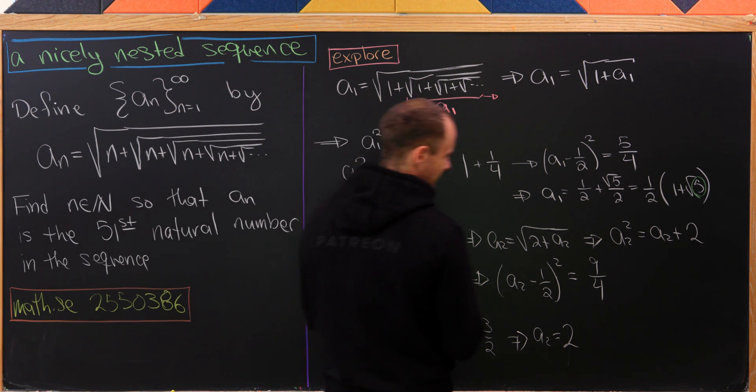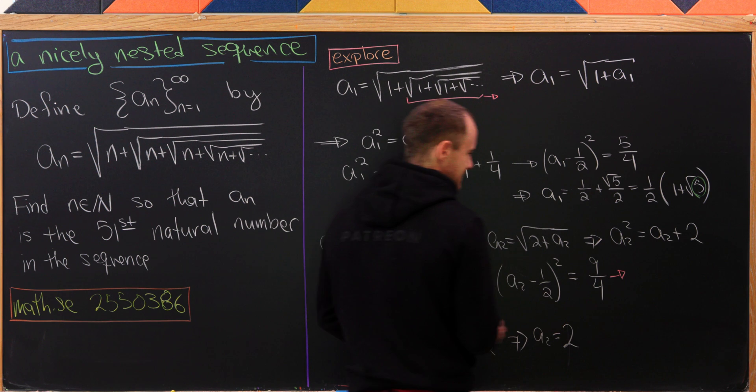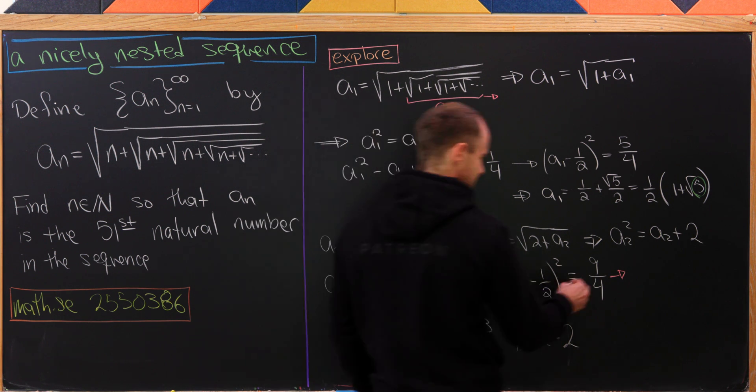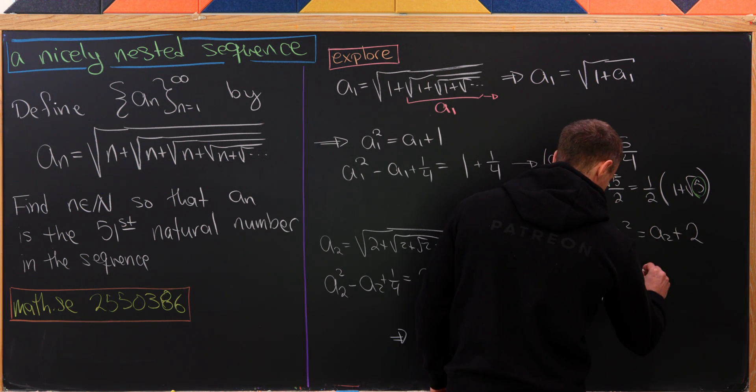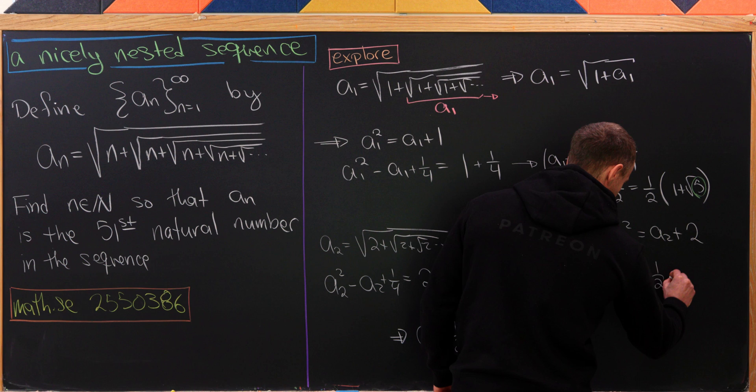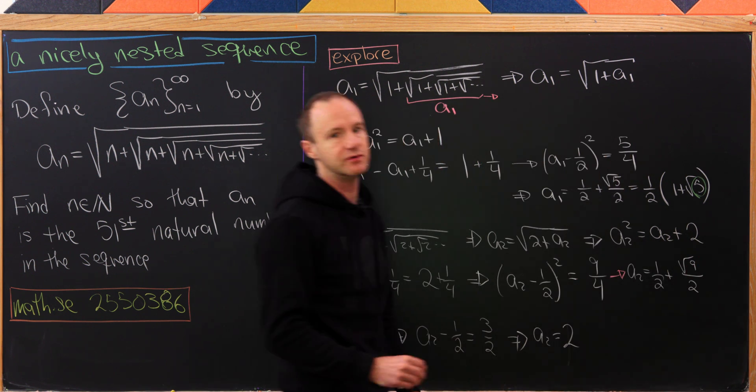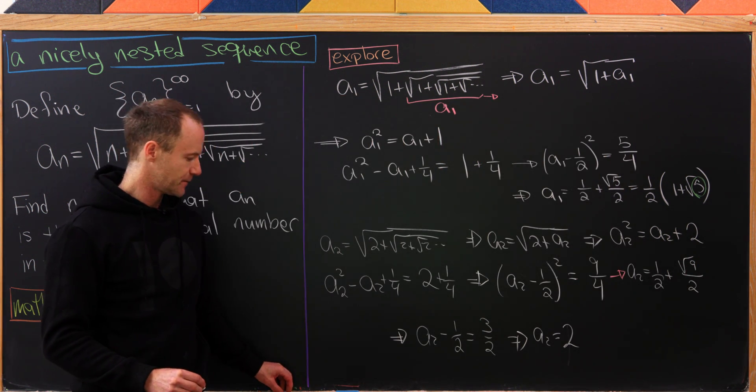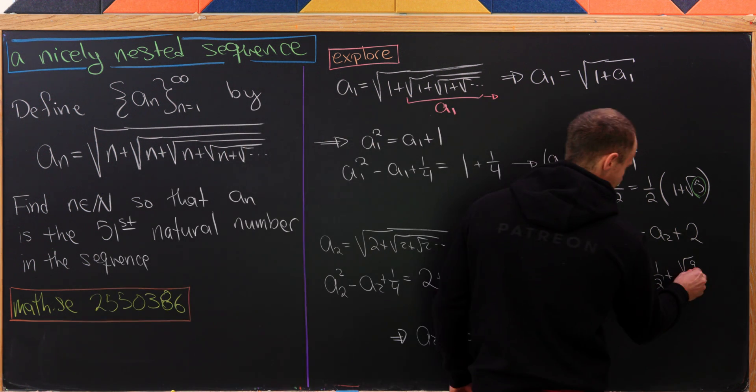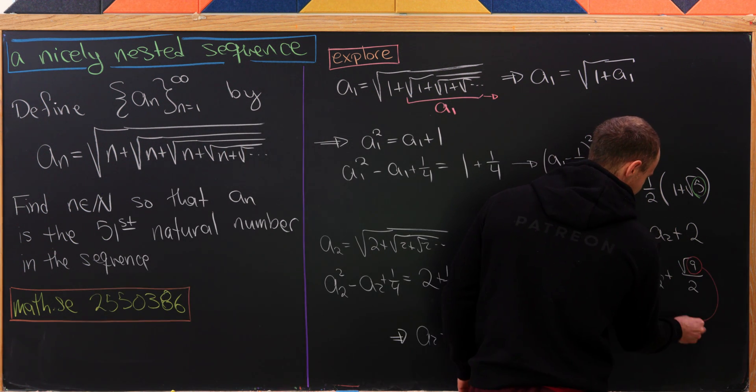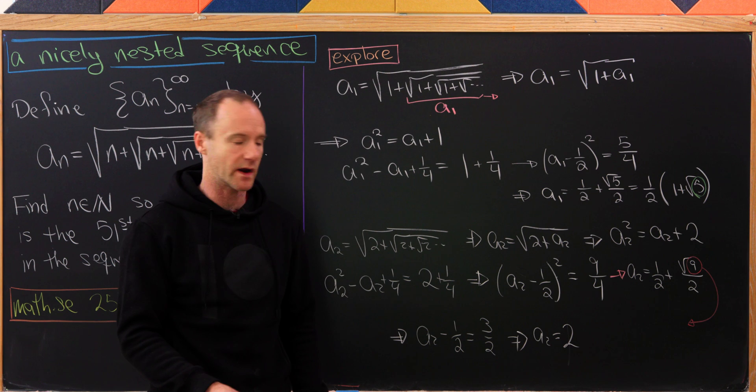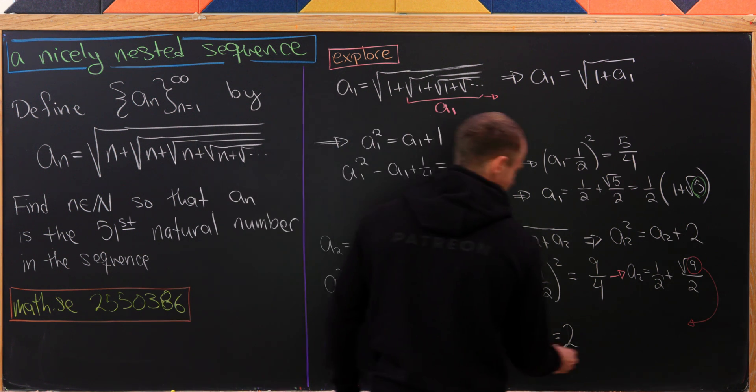Let's step back for a minute and see how we could figure this out. This is the same as saying a_2 equals 1/2 plus the square root of 9 over 2. Let's notice that this number 9 is the 2nd odd perfect square.